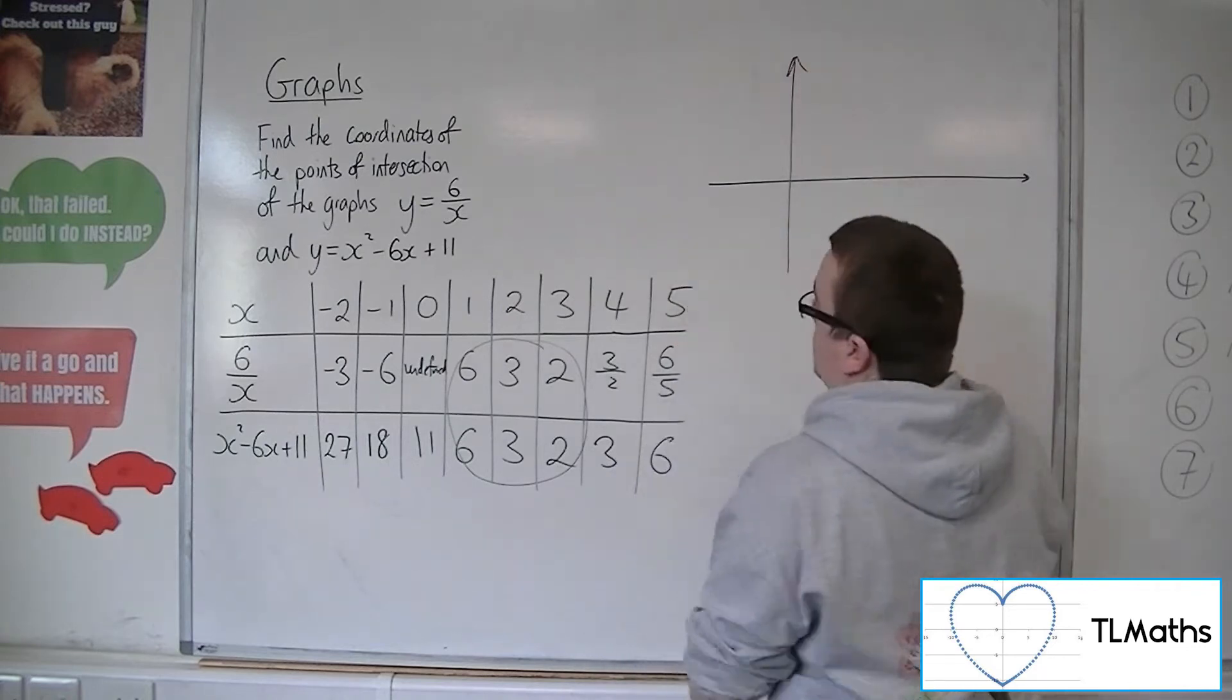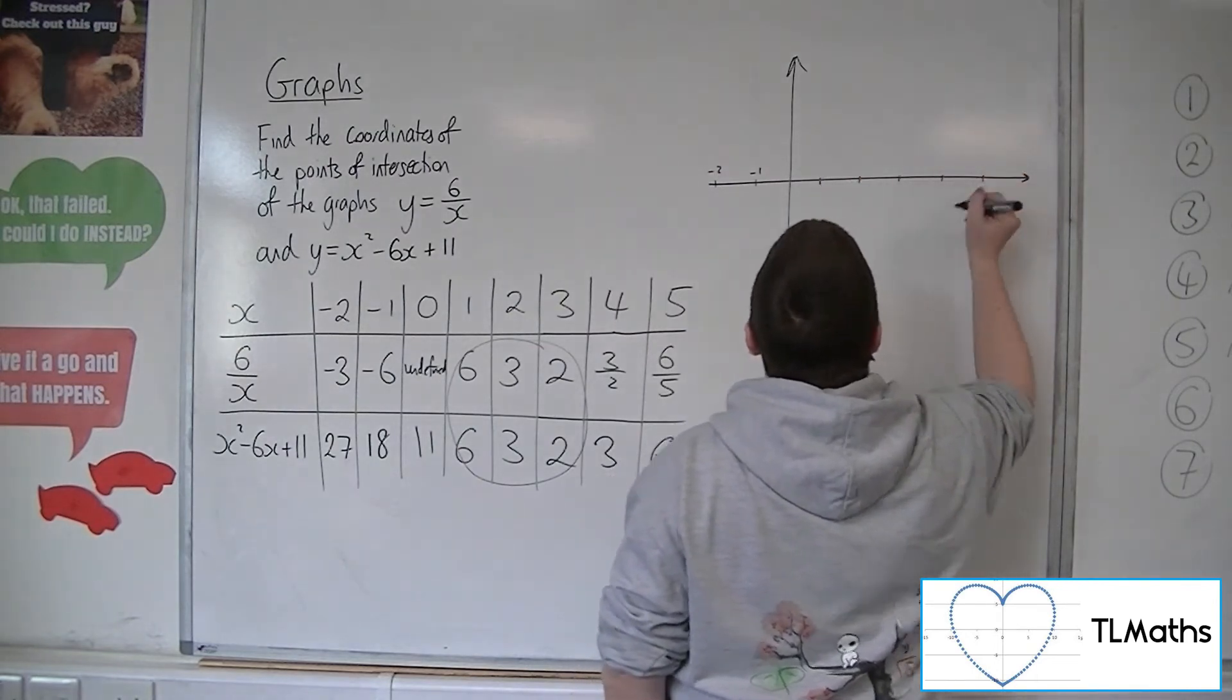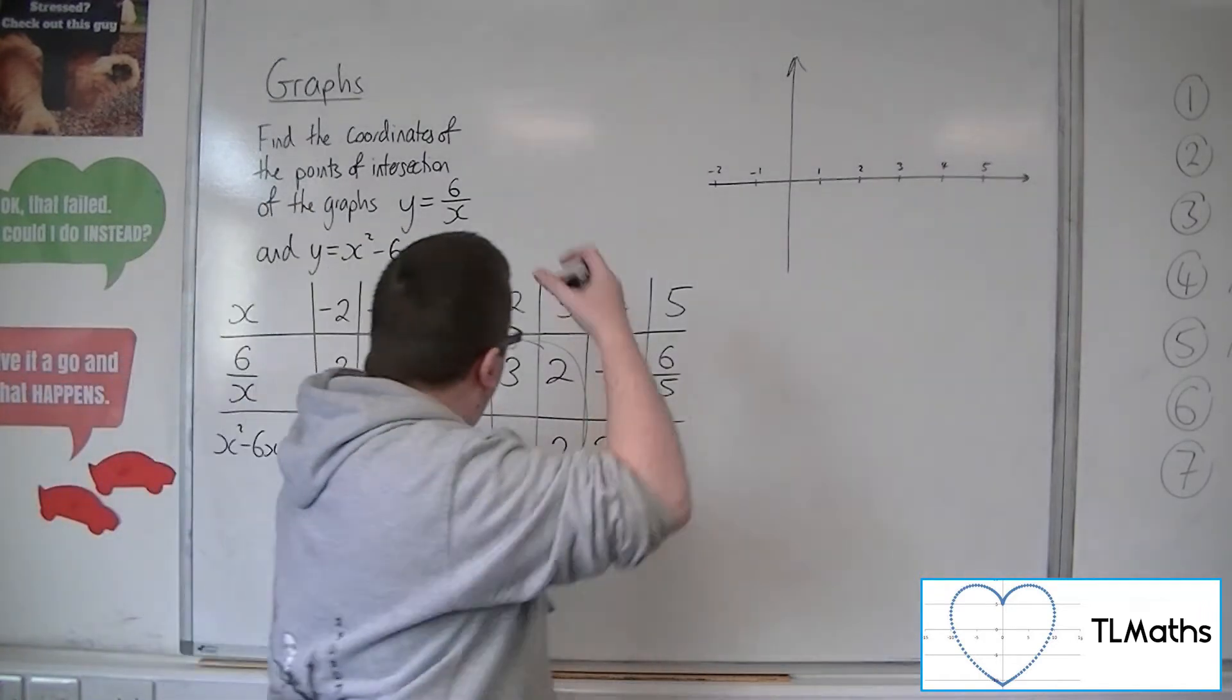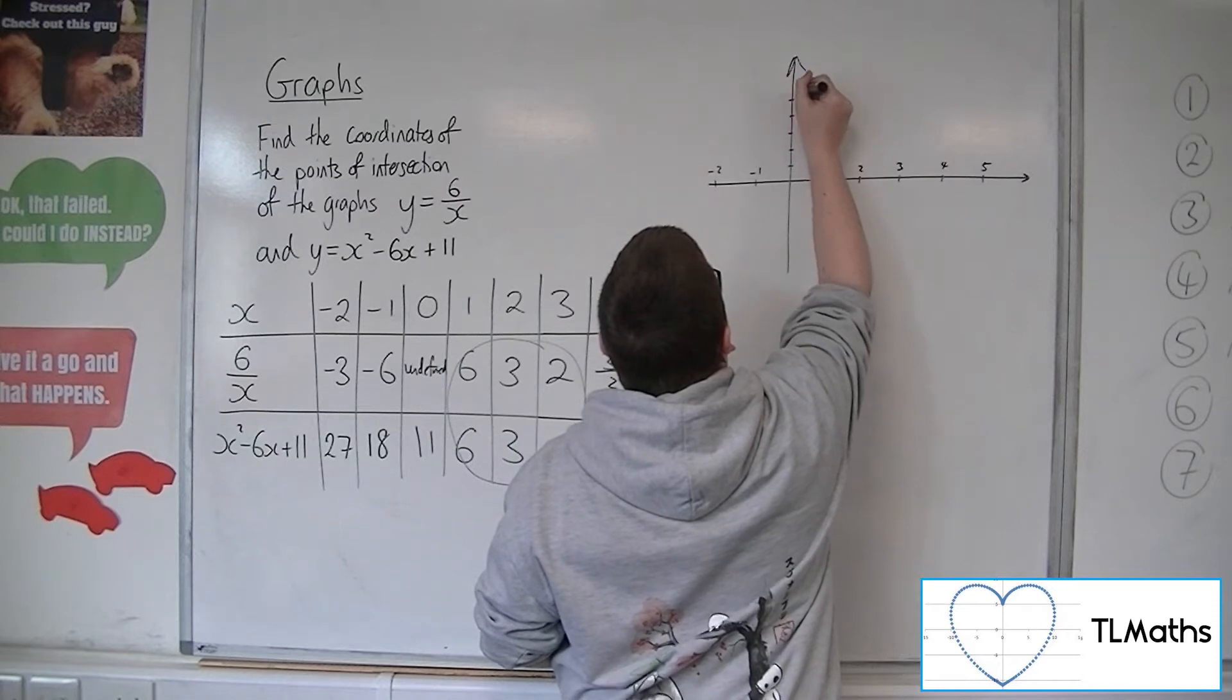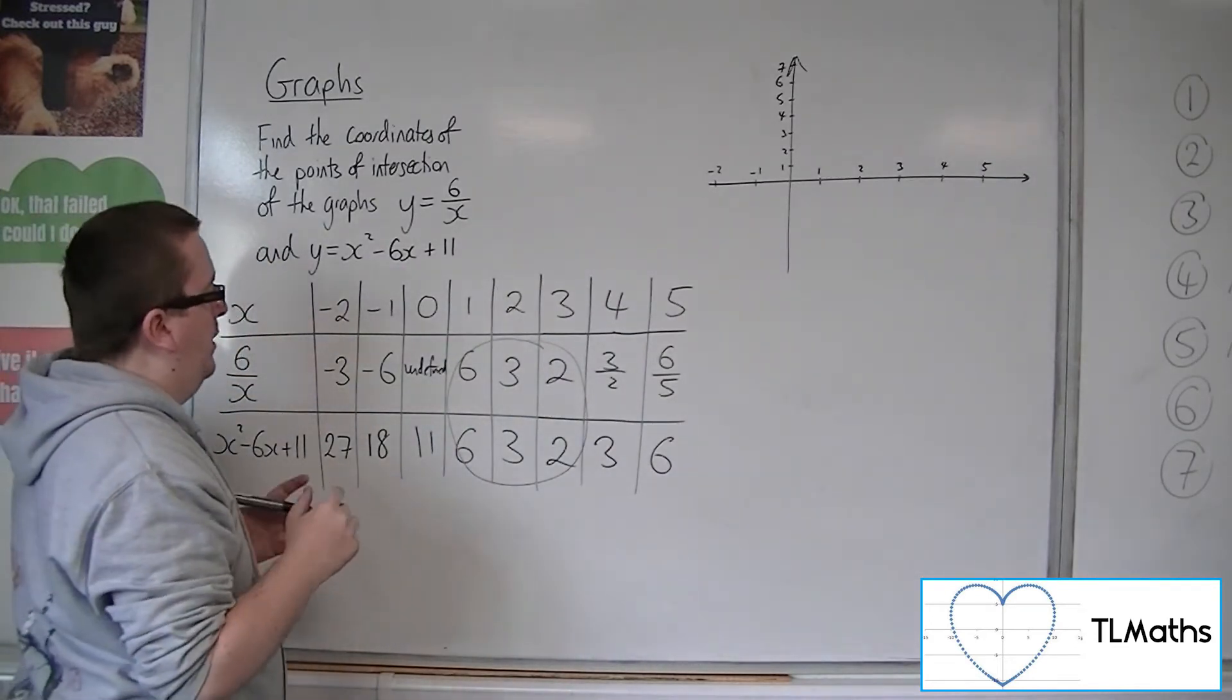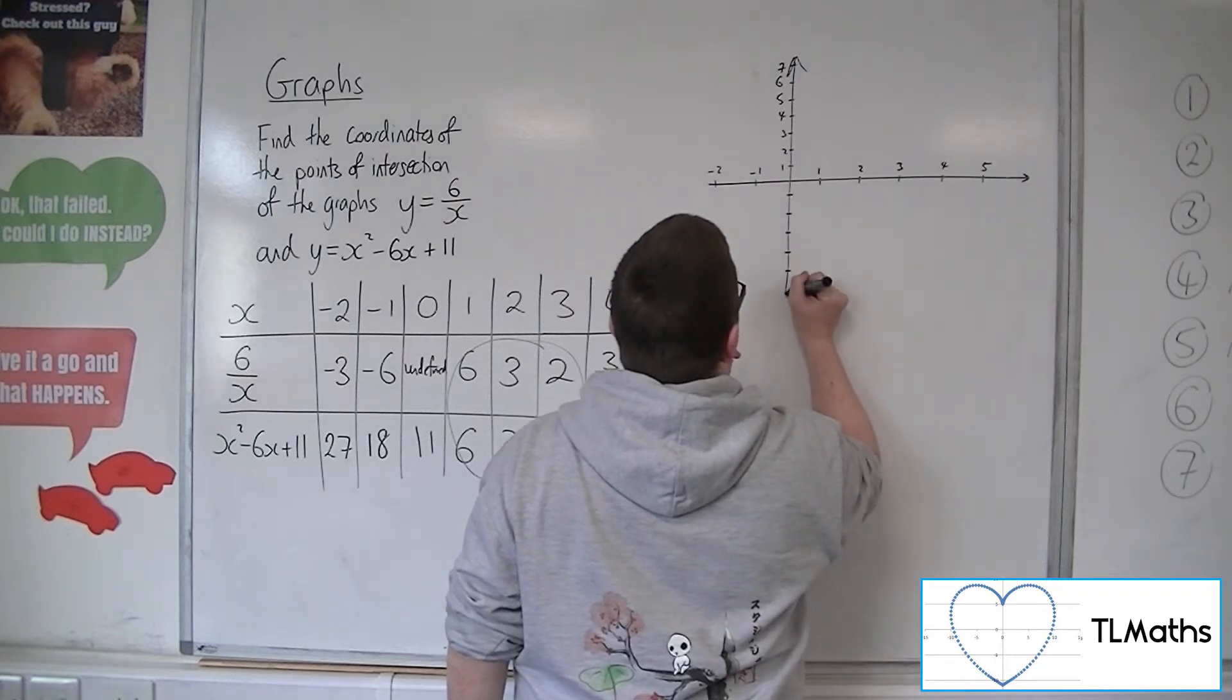So let's now draw a graph of these 2 functions. So let's give myself a little bit of space. So we'll have minus 1, minus 2. We'll have 1, 2, 3, 4, 5. Now, if we have up the y-axis, what do we need? Well, we probably need 1, 2, 3, 4, 5, 6, 7. Something like that. So 1, 2, 3, 4, 5, 6, 7. And then we're going to need some negatives down here, so minus 1, minus 2, minus 3, minus 4, minus 5, minus 6.